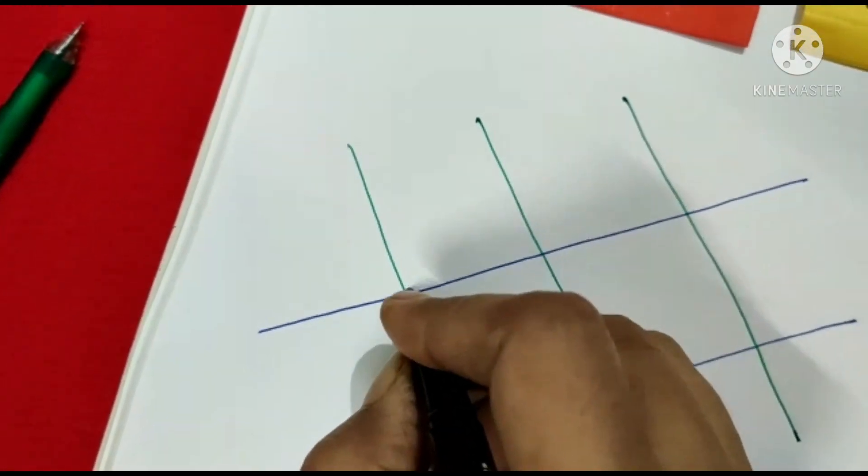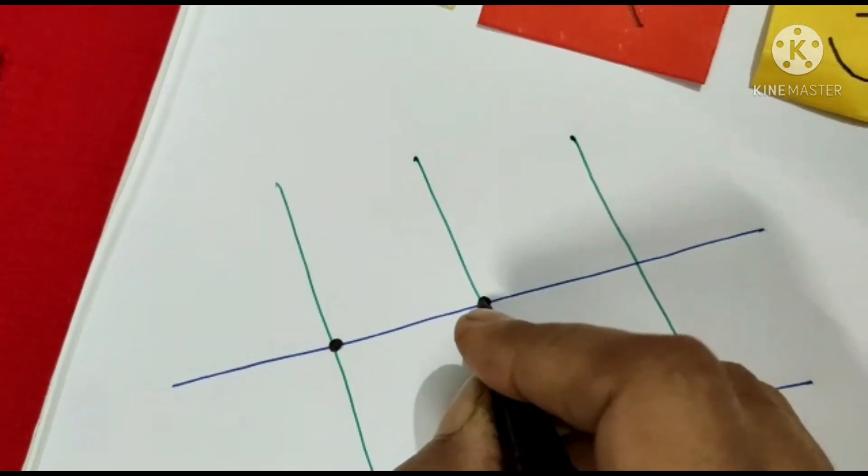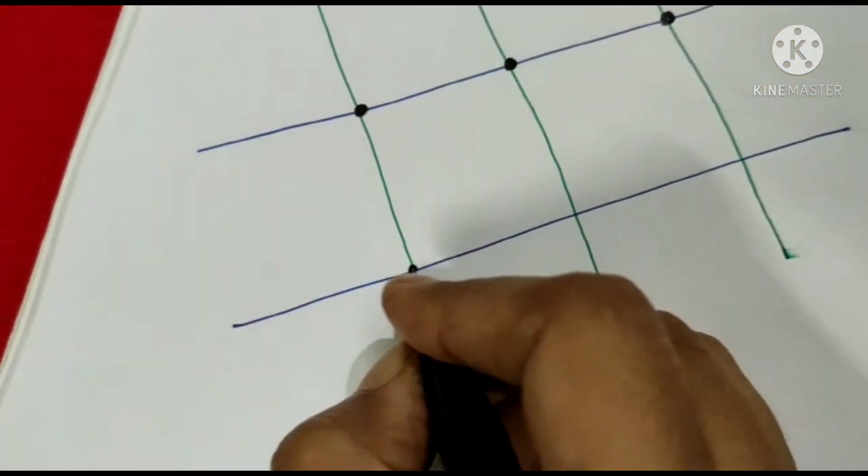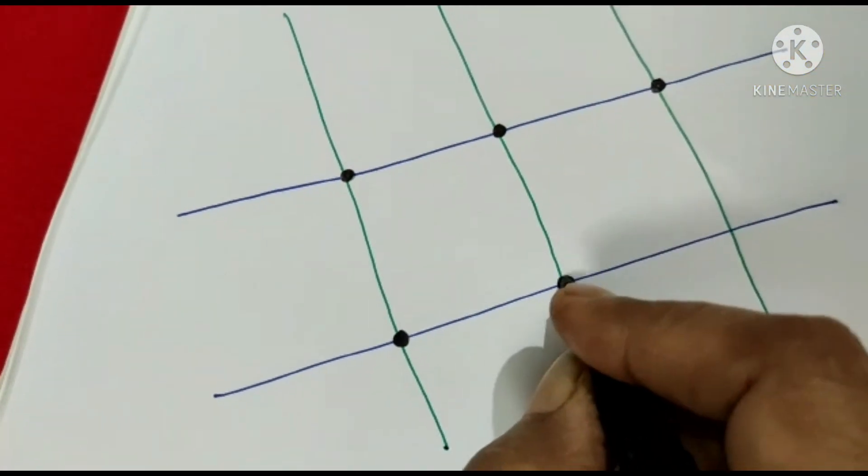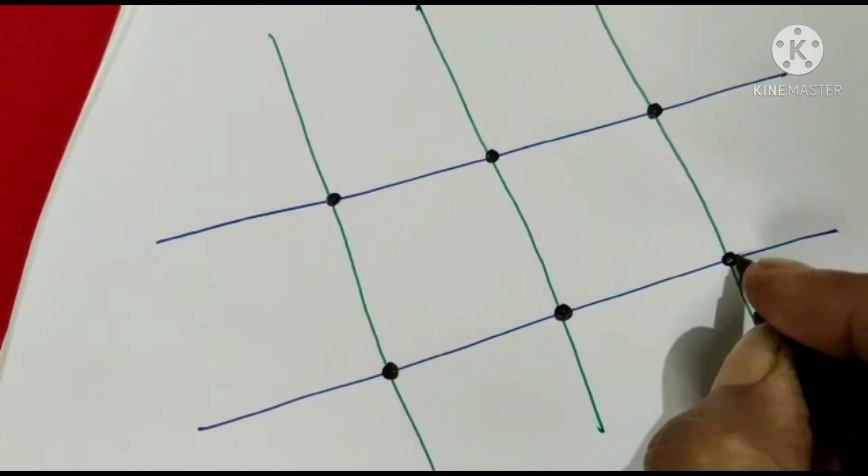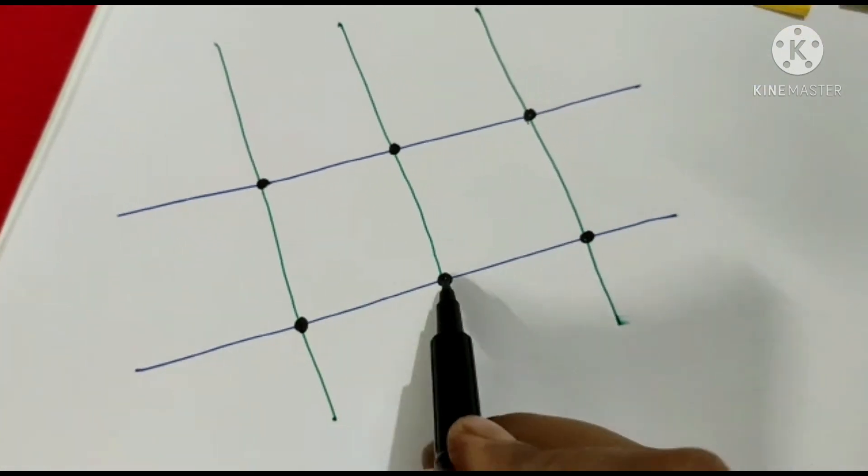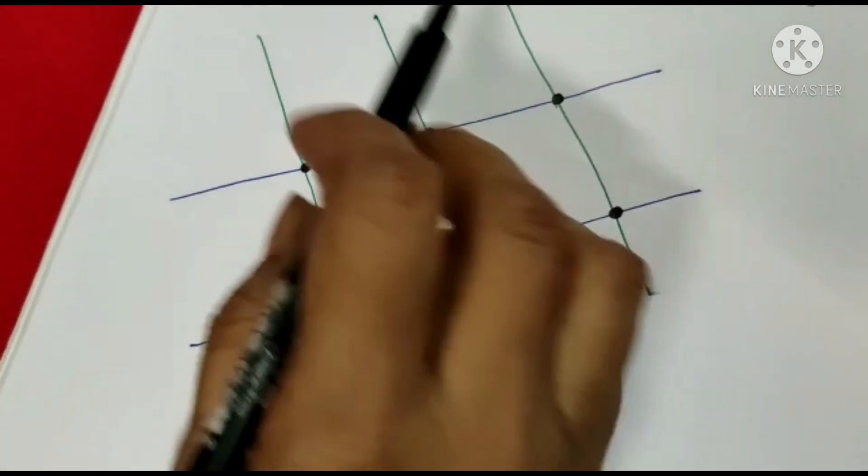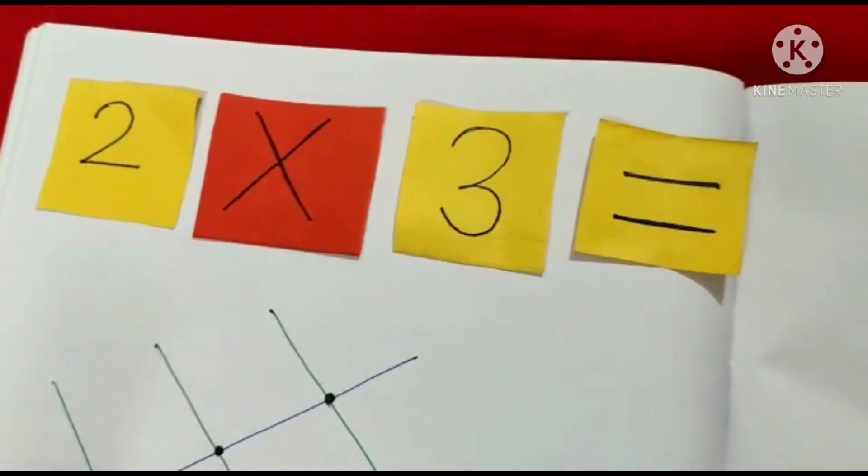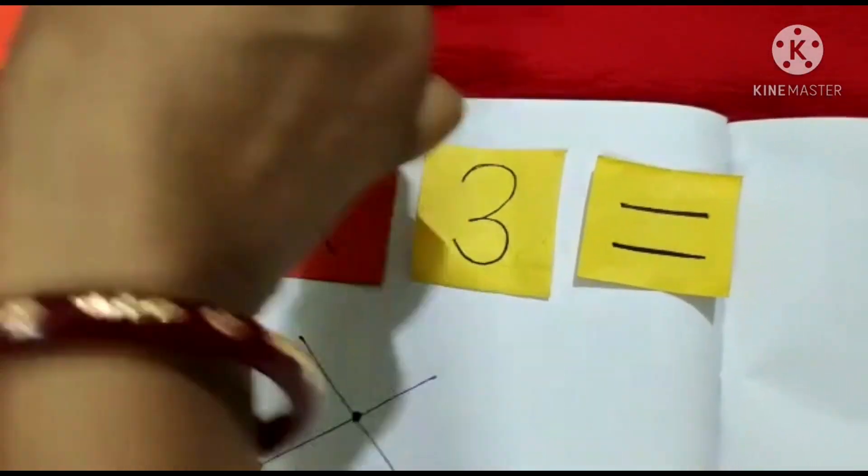1, 2, 3, 4, 5 and 6. So 1, 2, 3, 4, 5, 6. 2 threes are 6. We got the answer.